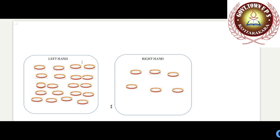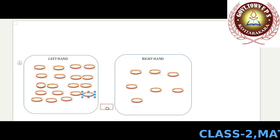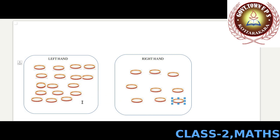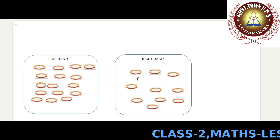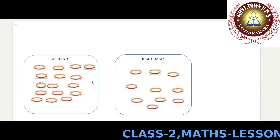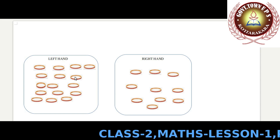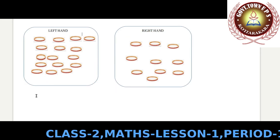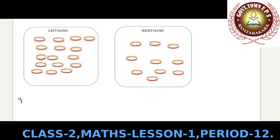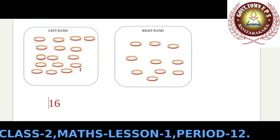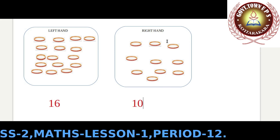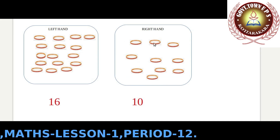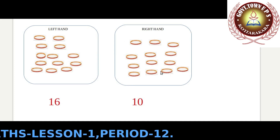If she wears 10 bangles in the right hand, how many bangles will she wear in the left hand? With 10 in the right hand, let's count the left: 1 through 16. So 16 bangles in the left hand and 10 bangles in the right hand.